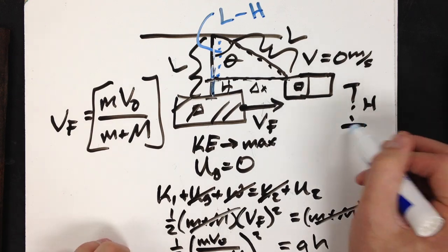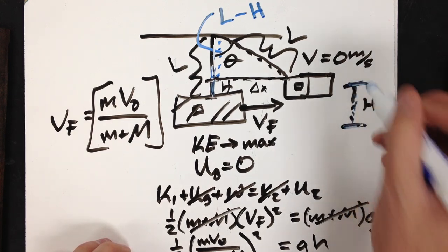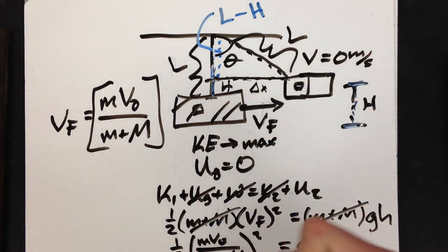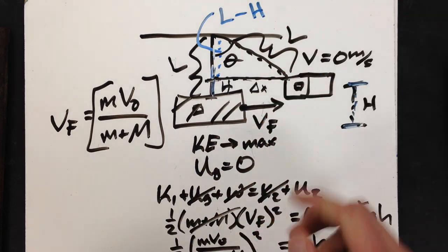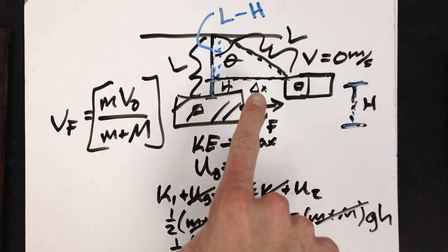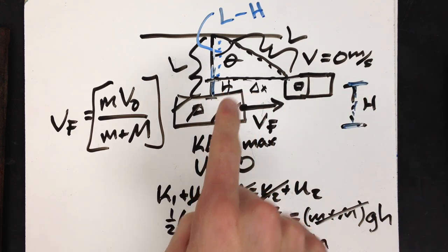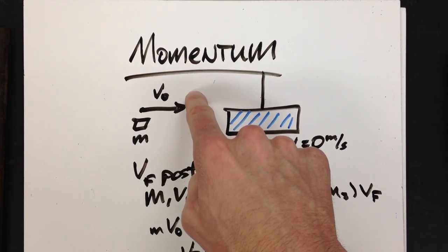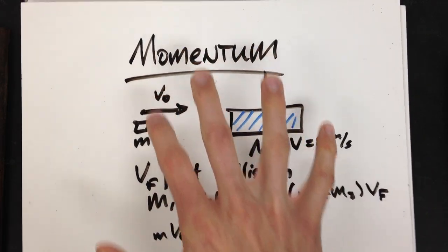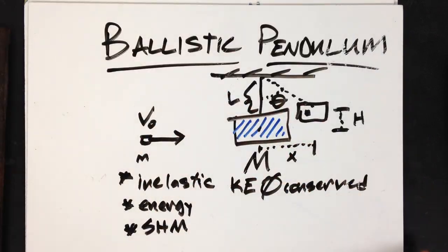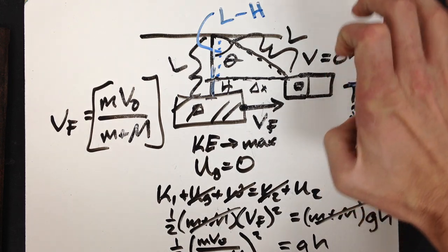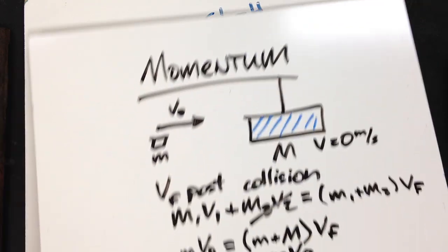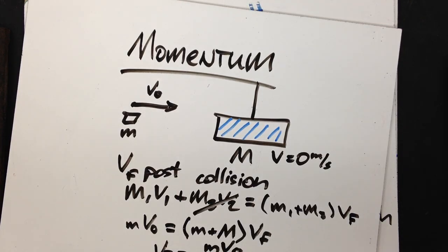And you can solve for height. Height is going to be very important because the height will tell me how much potential energy I have at the top, and I can use that to maybe backtrack to the speed I had post-collision, and I can use the speed I have post-collision to figure out maybe the initial velocity of the bullet. So you will either work this way, going towards final state, or you might work back, and work back to your initial state.